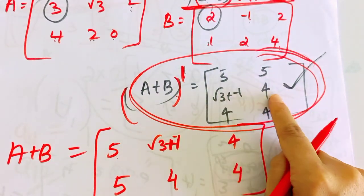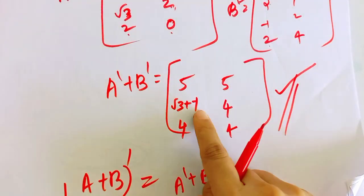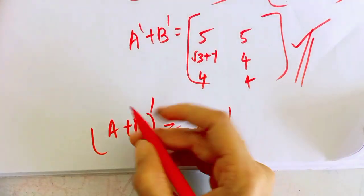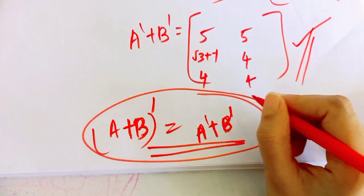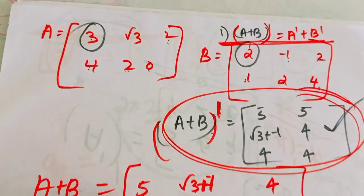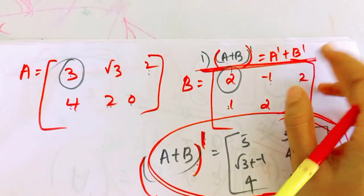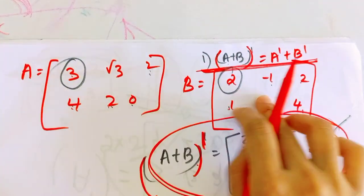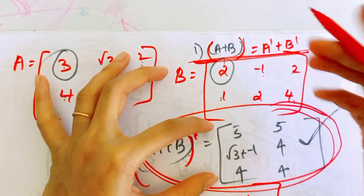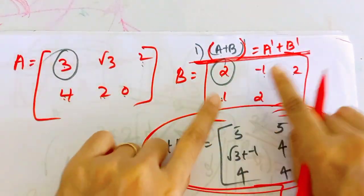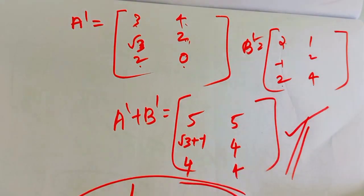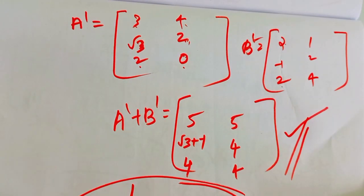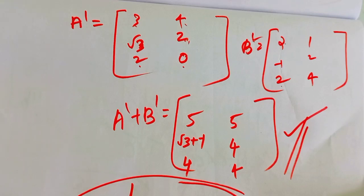A transpose is 5, 5, 4, 4, and the combined result shows (A plus B) transpose equals A transpose plus B transpose. The two sides are equal. This verifies the property. If you have a transpose, you can verify this. This is an important question. I will see you in the next class and next video. Thanks for watching!